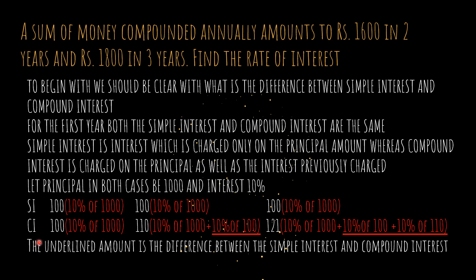But in compound interest, the first year it will be the same — 10% of 1000. In the second year it will be 10% of 1000 plus 10% of 100, which is the previously charged interest. In the third year it will be 10% of 1000 plus 10% of 100 plus 10% of 110. The underlined amount is the difference between the simple interest and the compound interest.